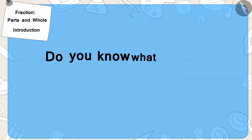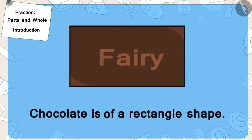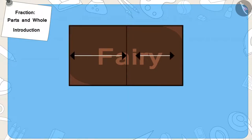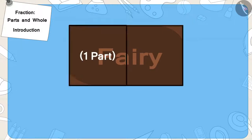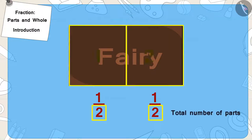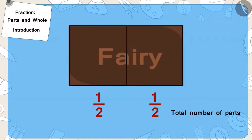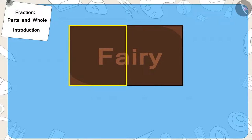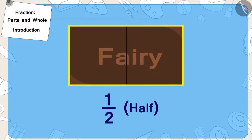Children, do you know what half is? Suppose Bunny's chocolate is of a rectangle shape. If we divide it into two equal parts like this, this part is one part of these two equal parts. We can write it as a fraction — here two is the total number of parts and one is one part of those two equal parts. We also call this half of the whole chocolate.